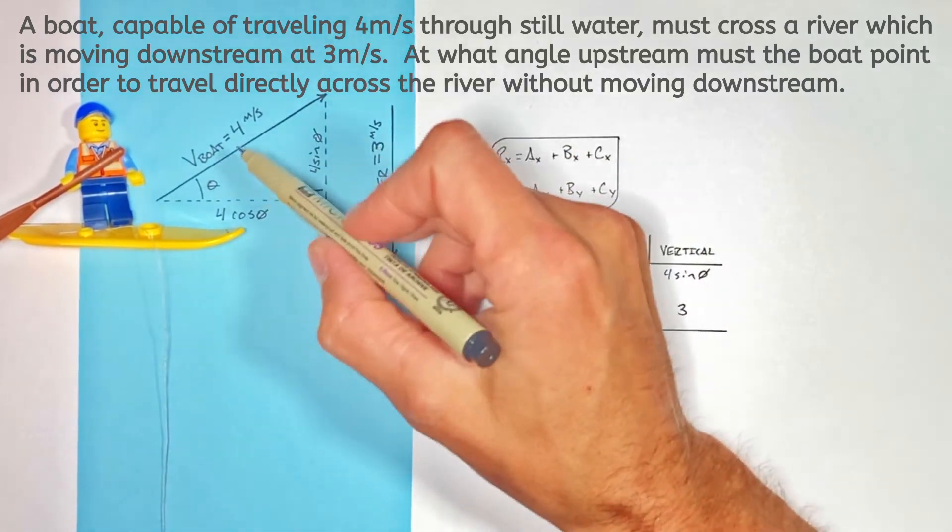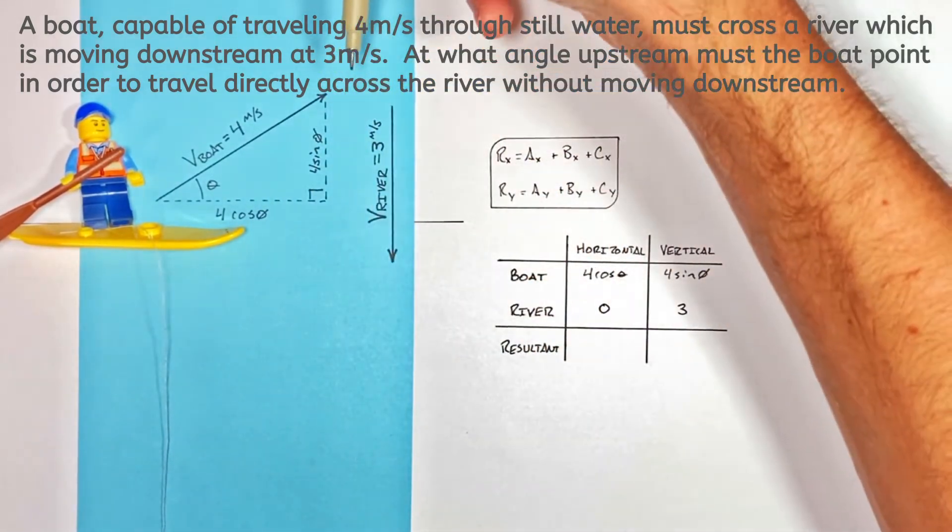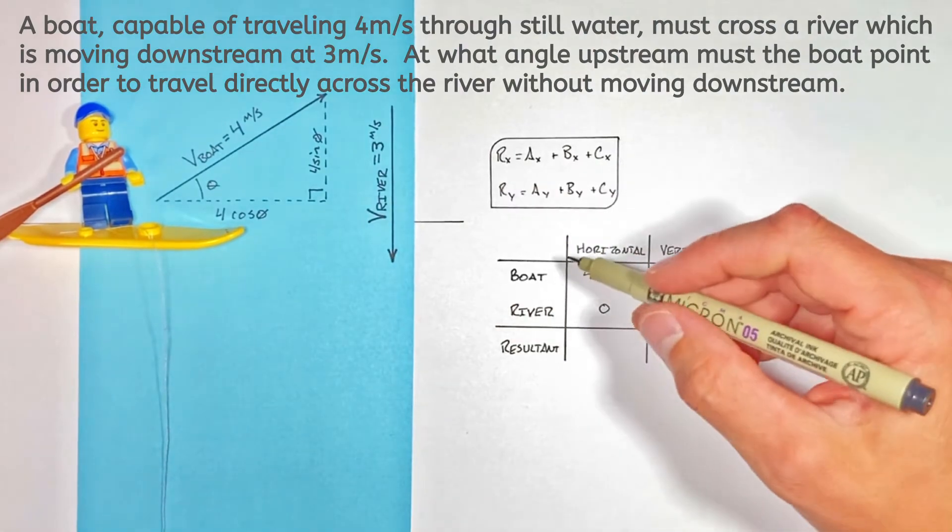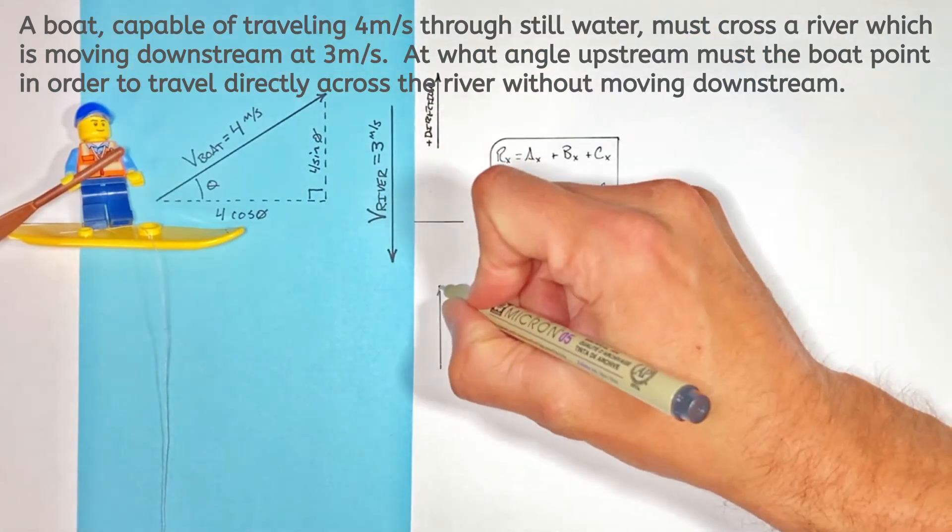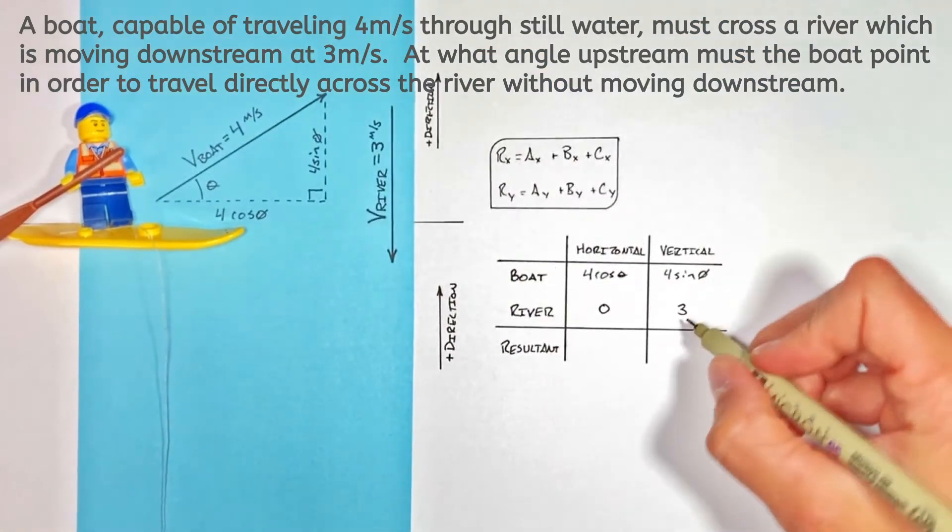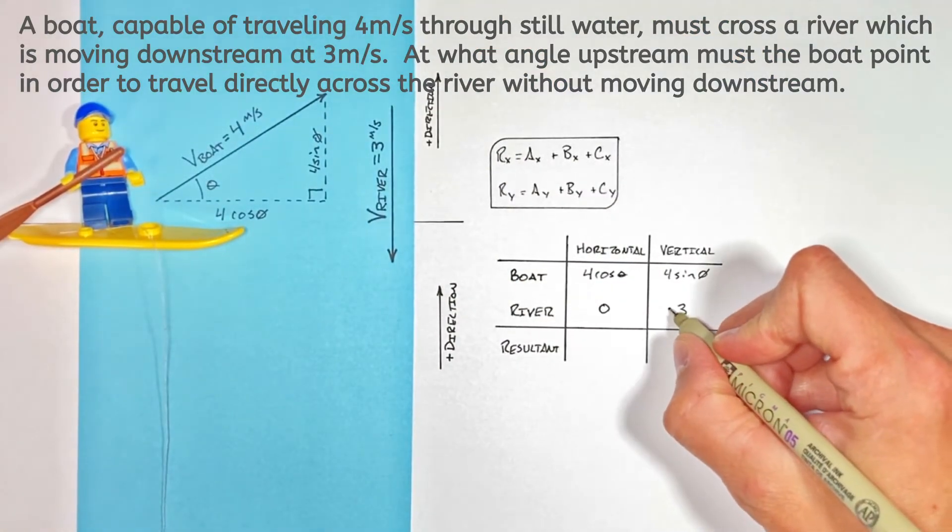Now, we have to be a little bit careful here. Since the boat's trying to go upstream and the river is flowing downstream, we have to be careful about this sign within our vertical axis. So we're going to say upstream is the positive direction, which means the downstream flow of the river is negative.